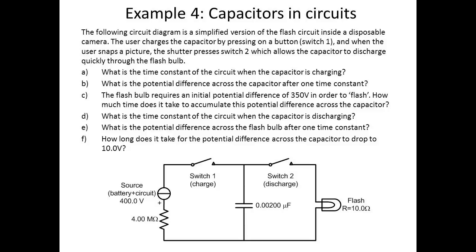What is the time constant of the circuit when the capacitor is charging? What is the potential difference across the capacitor after one time constant? The flash bulb requires an initial potential difference of 350 volts in order to flash. How much time does it take to accumulate this potential difference across the capacitor? What is the time constant of the circuit when the capacitor is discharging? What is the potential difference across the flash bulb after one time constant, and how long does it take for the potential difference across the capacitor to drop to 10 volts?